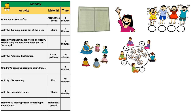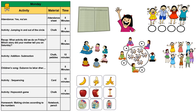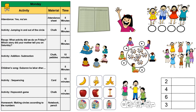Now ask all the children to count all the pebbles to write and tell the answer. Similarly, play more games like this by reducing pebbles for subtraction. After this, get the children to sing the rhyme 'Gubba Roka Lekar Adher.' After that, teach sequencing. Next, have the kids play hopscotch. In the end, assign the homework of making circles according to the numbers.